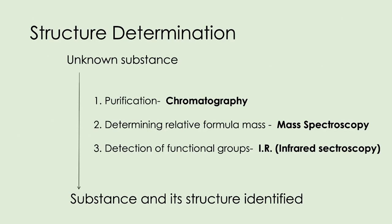As part of structure determination — working out what an unknown substance is — there are three steps. First, chromatography, which we've already met, is used to purify the sample by separating the mixture so we get one substance to identify. We then put it into a mass spectrometer and an infrared (IR) spectrometer, from which we can identify the pure substance and determine its structure.